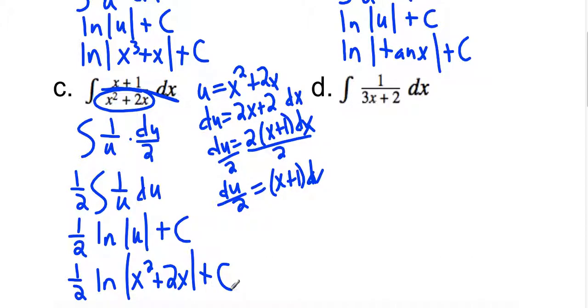All right. Let's see. Let's try this next one. Again, we're going to try and make that our u. 3x plus 2. I'm just going to make du 3 dx. I don't have a 3 dx. I just have a dx. So we'll divide that over here.